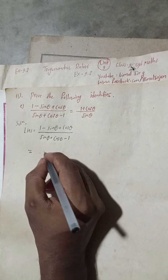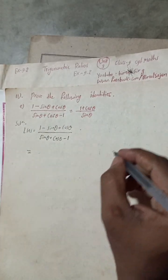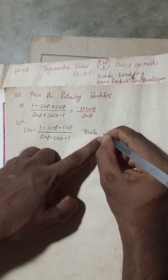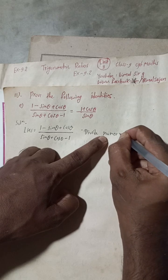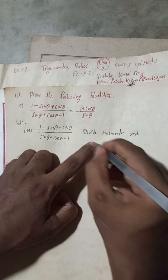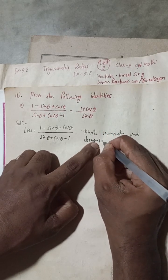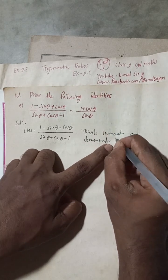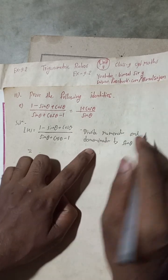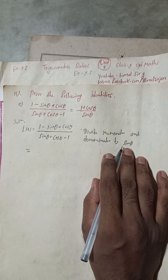What I will do here is divide the numerator and denominator by sinθ. Don't divide it by cosθ — divide it by sinθ.